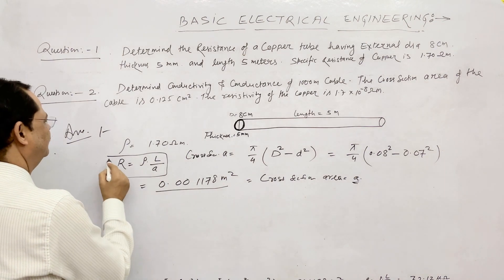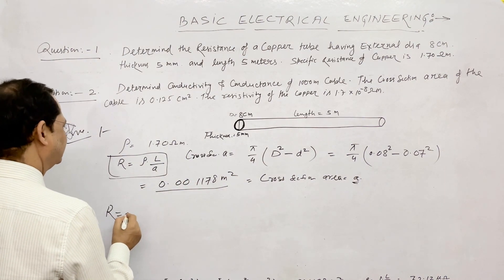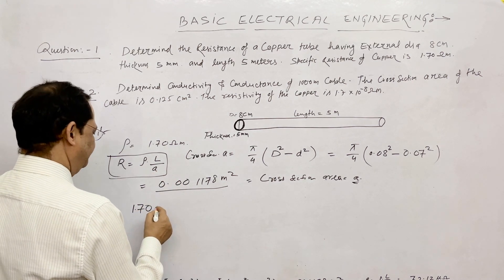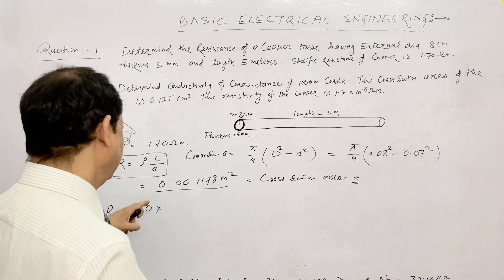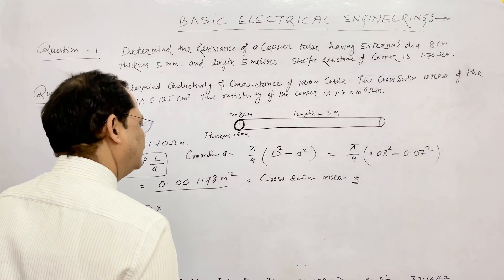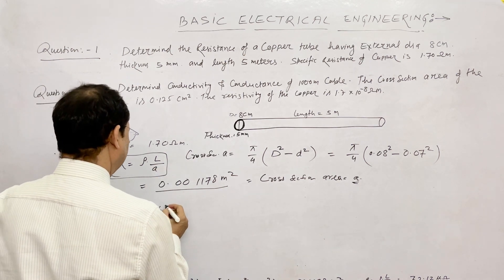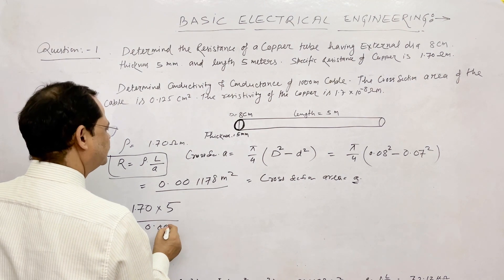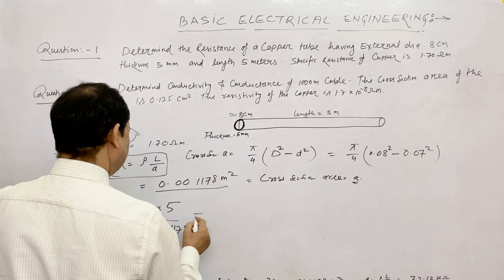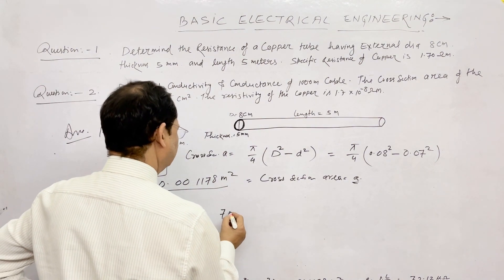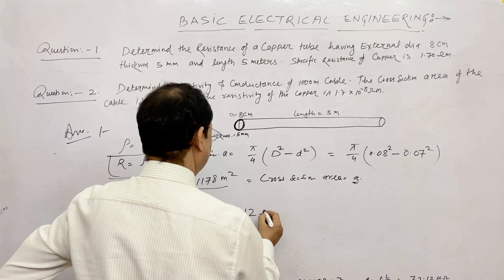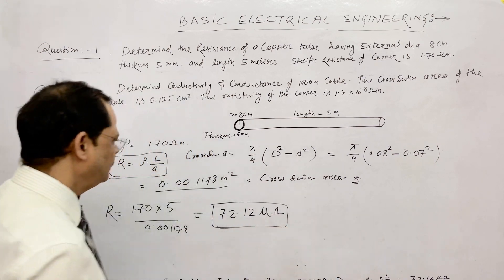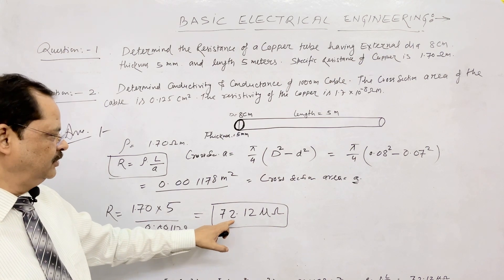Now we apply the formula R = rho × L / A. Rho is 1.70 × 10⁻⁸ ohm-meter, length L is 5 meters, and area A is 0.001178 m². Solving this, we get the resistance as 72.12 micro-ohm.